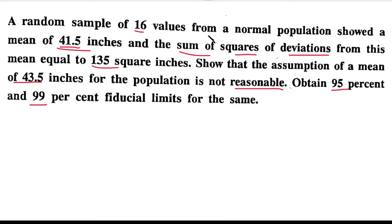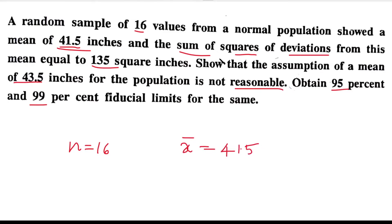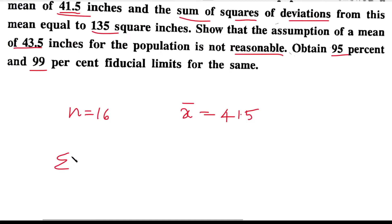From the question, a random sample of 16 values from a normal population showed a mean of 41.5 inches. So the sample size n = 16, the sample mean x̄ = 41.5 inches. Also given, the sum of squares of deviation from the mean, that is Σ(x - x̄)² = 135 square inches.